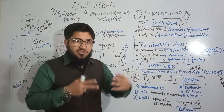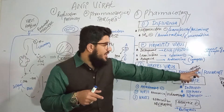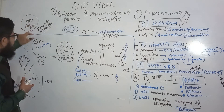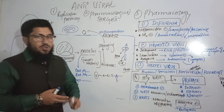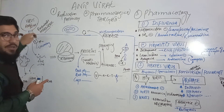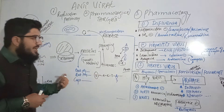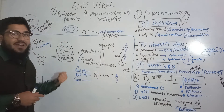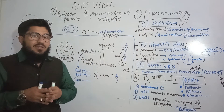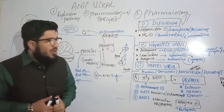The next drug is formivirsen, which has an interesting mechanism of action with two targets. First, it inhibits the attachment of the virus to the host cell. Second, it disrupts RNA synthesis — if any viral RNA is present inside the host cell, formivirsen destroys or disrupts that RNA. By targeting both attachment and viral RNA, it effectively disrupts the viral life cycle.